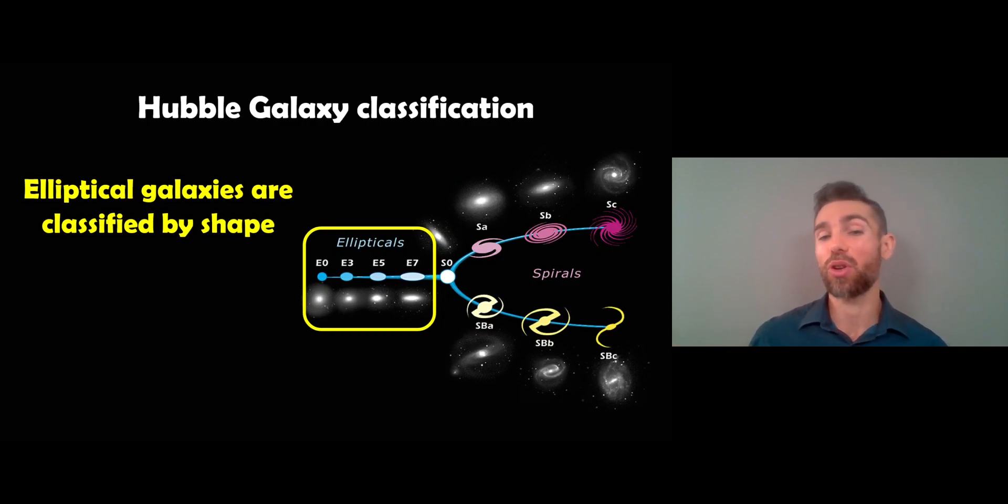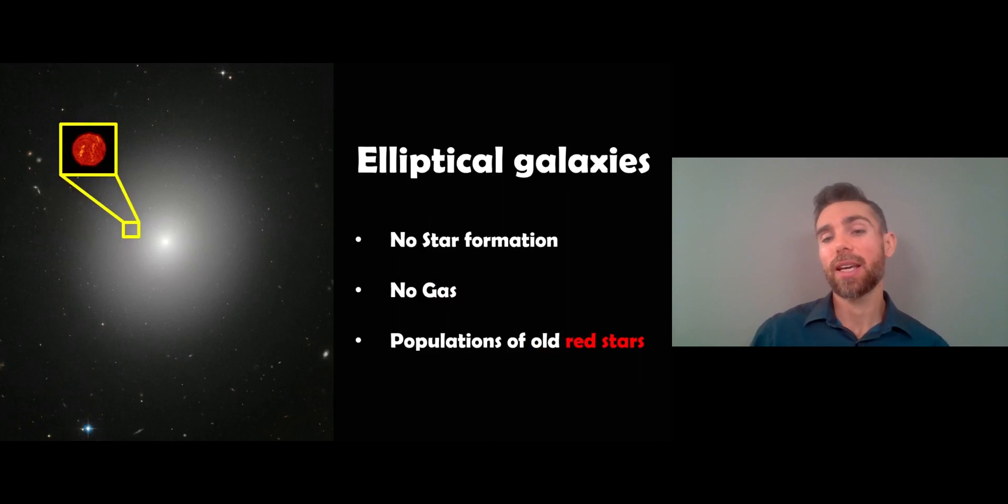They don't have any recent star formation occurring, they don't have any gas, that's why there's no recent star formation, and they have populations of old red stars. You typically find that you've got the older population of stars there instead compared to the spiral galaxies. This is important when we start to look at the jellyfish galaxies because we're not really going to see an elliptical jellyfish galaxy because they don't have any gas in them, and it's the gas that's important.